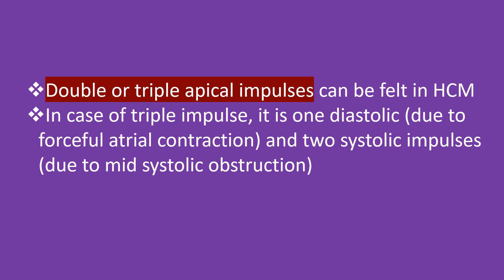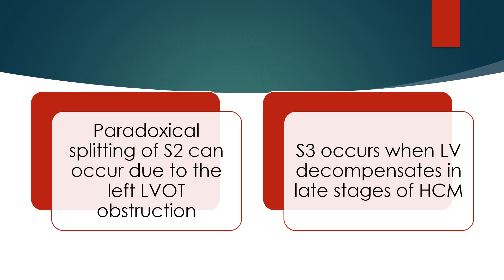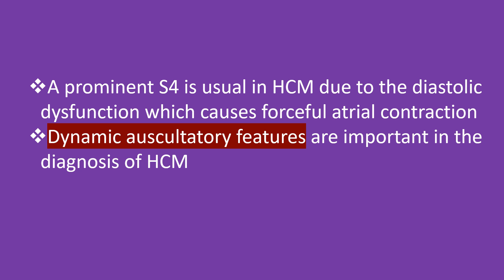Double or triple apical impulses can be felt in HCM. In cases of triple impulse, one is diastolic due to forceful atrial contraction and two are systolic due to mid-systolic obstruction. Paradoxical splitting of the second heart sound can occur due to left ventricular outflow tract obstruction. A third heart sound occurs when the left ventricle decompensates in late stages of HCM.